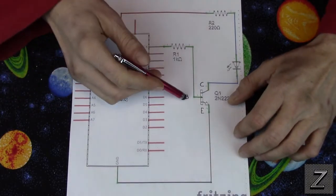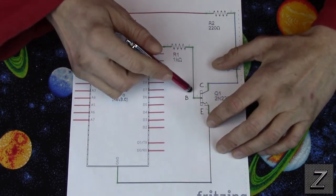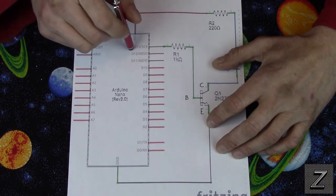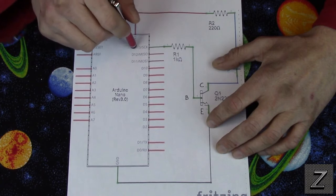Now first, we have the base of the transistor and we have that hooked to digital pin 13, because pin 13 in the blink program is the pin that you use.